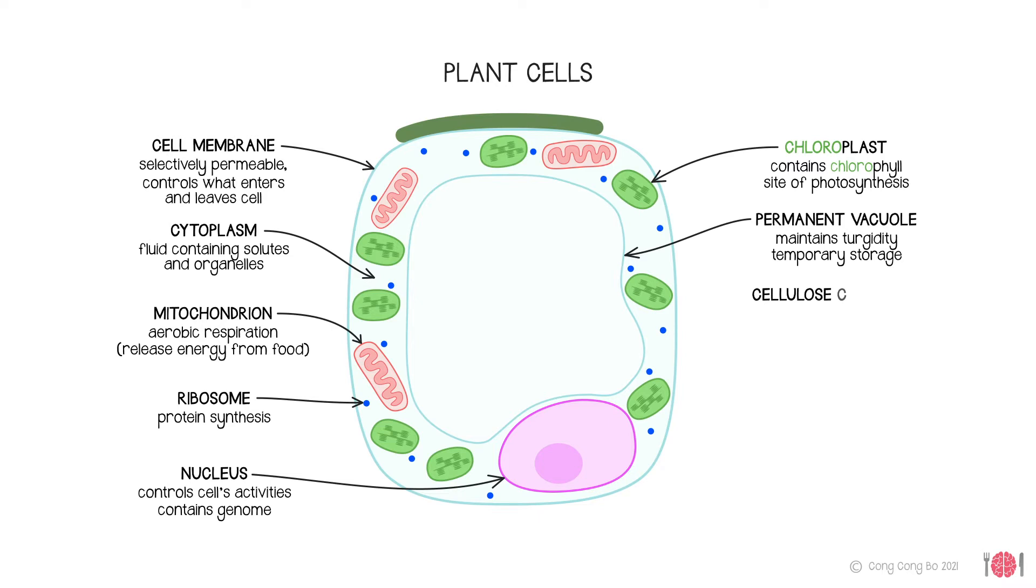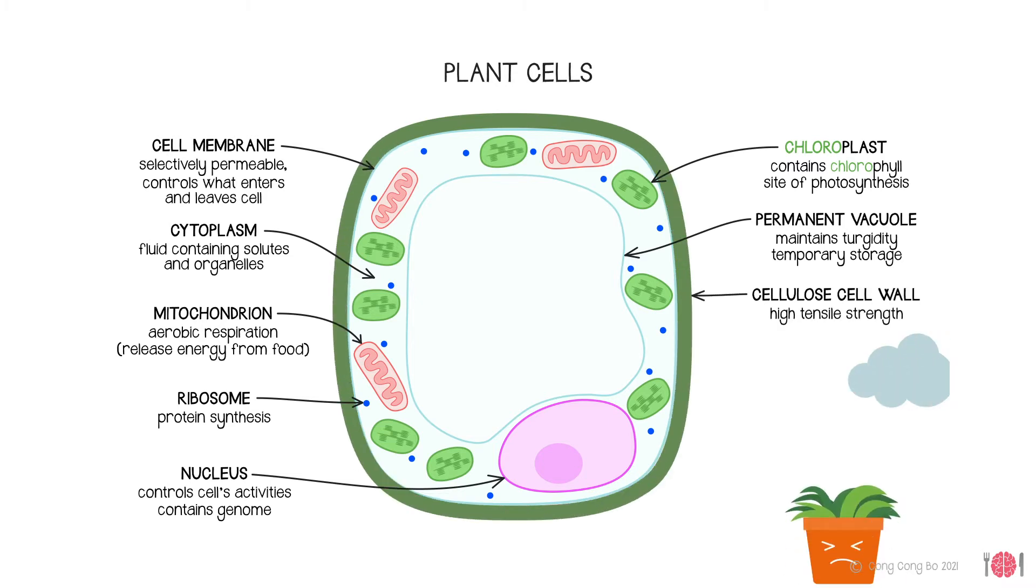Surrounding the cell membrane is a cell wall made of the strong fibrous material cellulose. When a plant has recently been watered, you'll notice that it perks up because the water enters its cells so the cytoplasm expands and pushes against the cell wall, a state we call turgid. The cell wall prevents too much water from entering and causing the cell to burst.